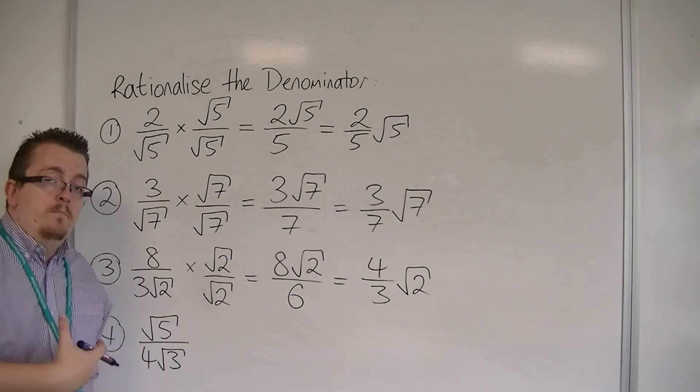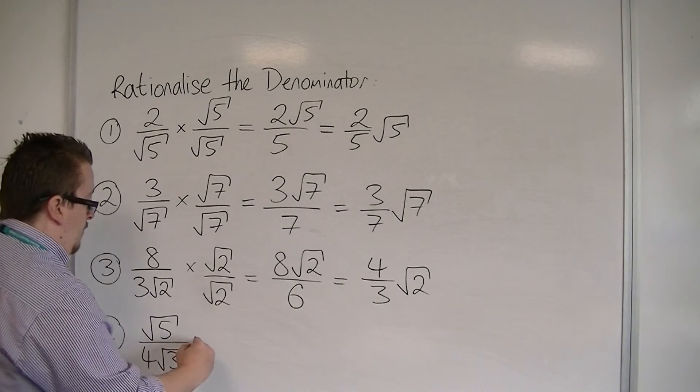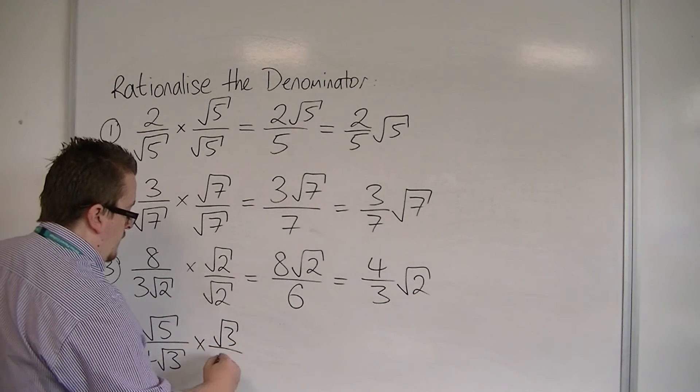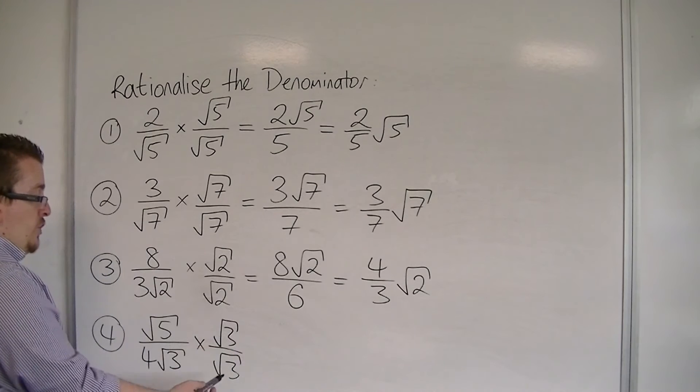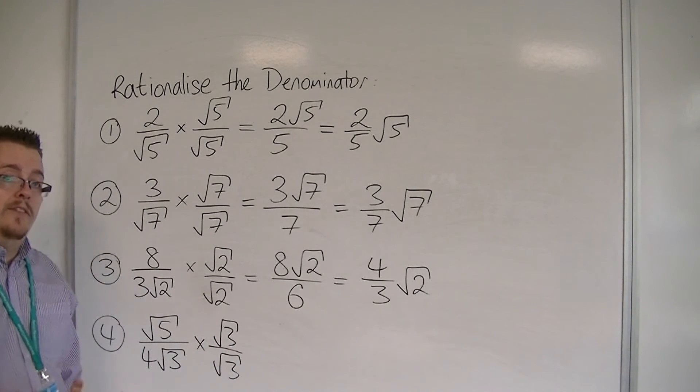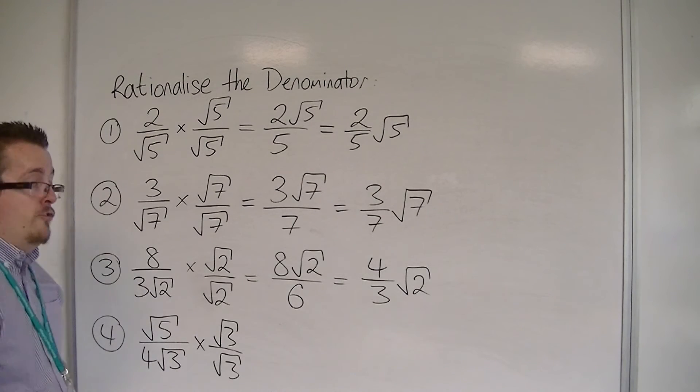I can do the last one in much the same way. I'd multiply top and bottom by root 3 over root 3. Once again, I could have chosen to do 4 root 3 over 4 root 3, but it would just introduce more cancelling down.